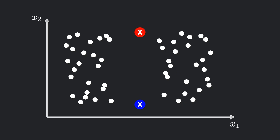The next step is to calculate the distance between each data point and the two centroids, and then assign each point to whichever centroid it is closest to. For example, if a point is closer to the red centroid, we assign it to the red cluster, and if it's closer to the blue centroid, we assign it to the blue cluster.